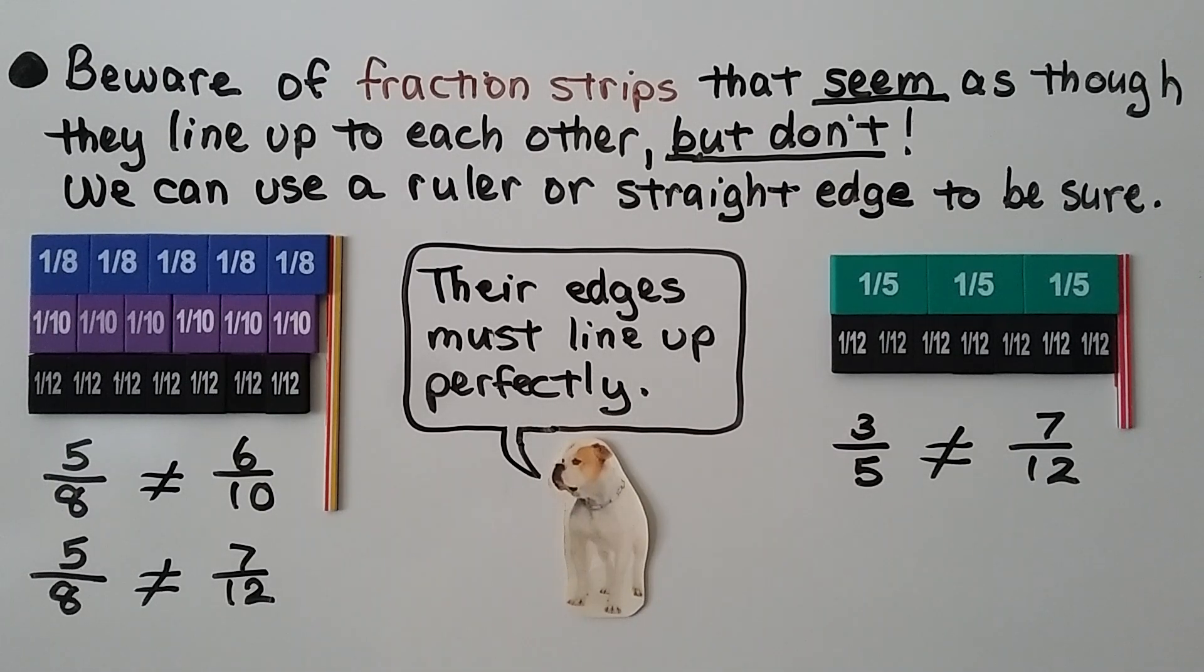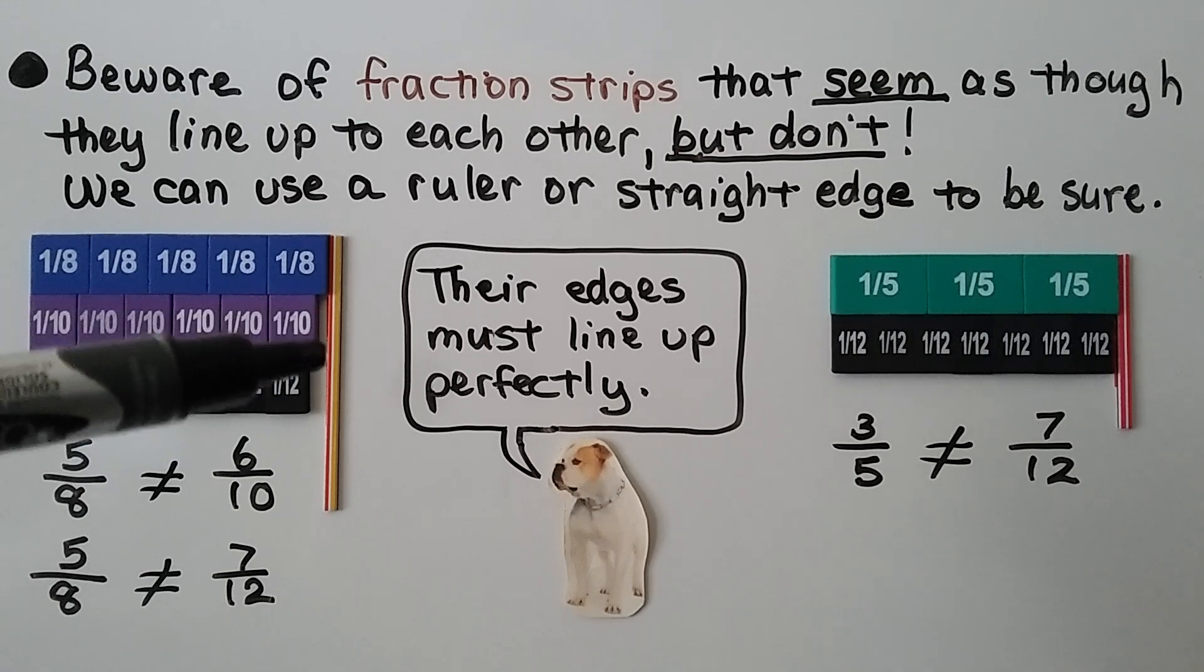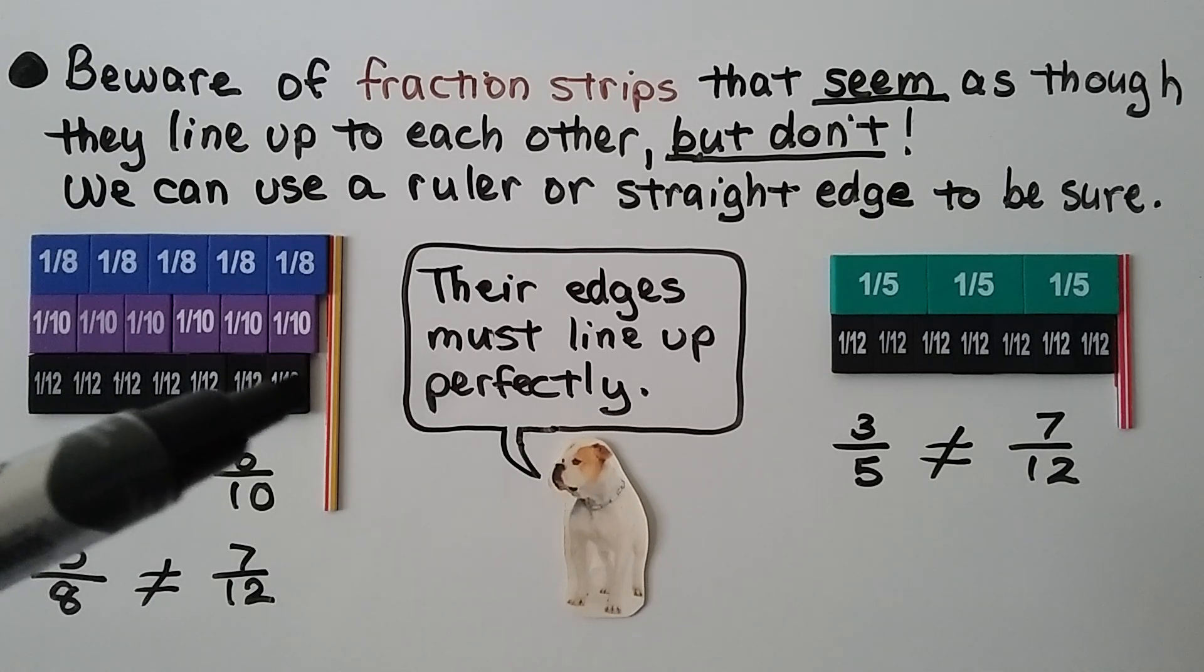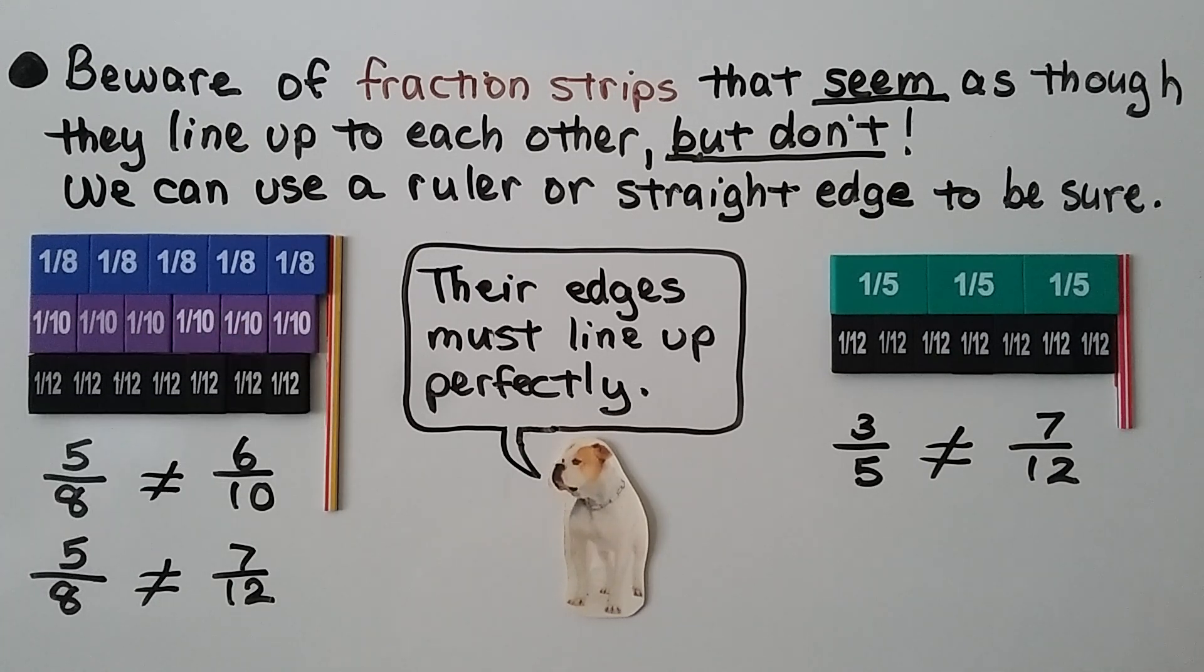Beware of fraction strips that seem as though they line up to each other, but don't. We can use a ruler or straightedge to be sure. Here we have five-eighths, but six-tenths, we still have a little gap here, so they are not equal to each other. Here, we have seven-twelfths, and we can see the little gap, so it's not equal to five-eighths either. Their edges must line up perfectly.